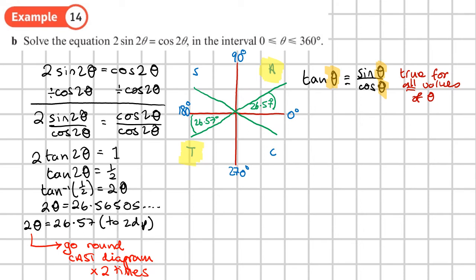This will give me all the other values of 2 theta. So I've already got 26.57. The next angle I get is this one here, which is 180 plus 26.57. So I'll write that down, 180 plus 26.57.